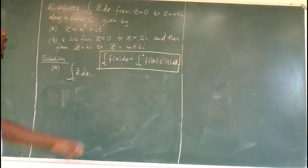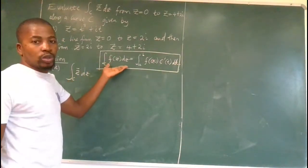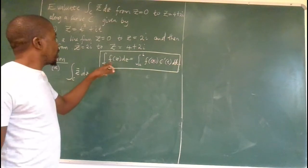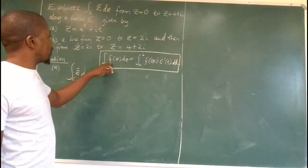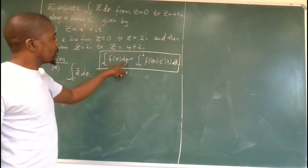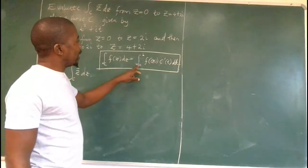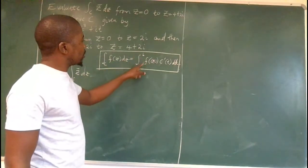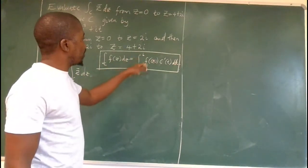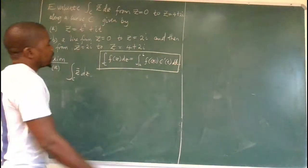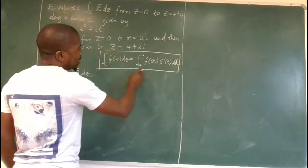So the idea is to just, to do this integral we need to recall this formula, which says that the integral of this complex valued function is none other than the integral over a, b, where a, b are the limits for the parameter t.